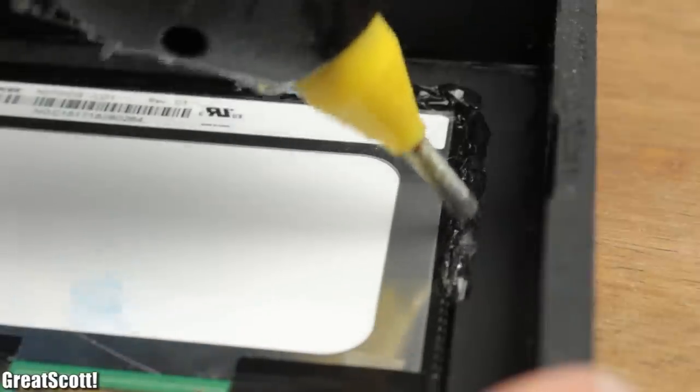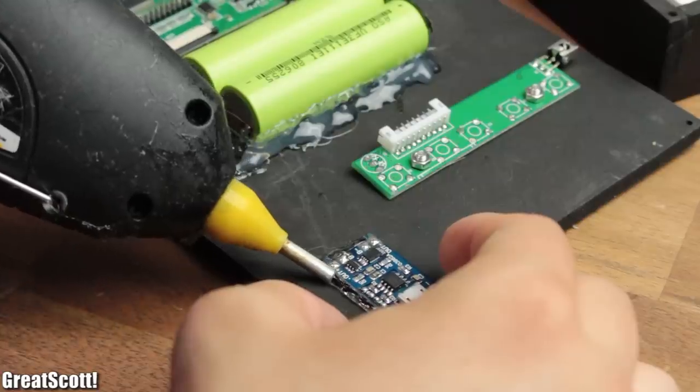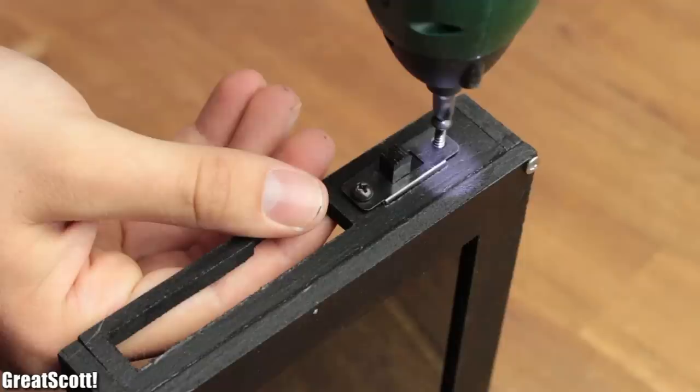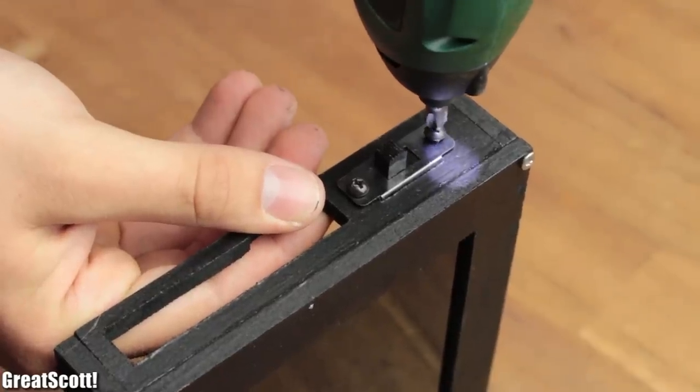I also used hot glue to secure the main LCD, the battery charger circuit, the charging LEDs and all of the push buttons. And lastly I secured my slide switch with screws.